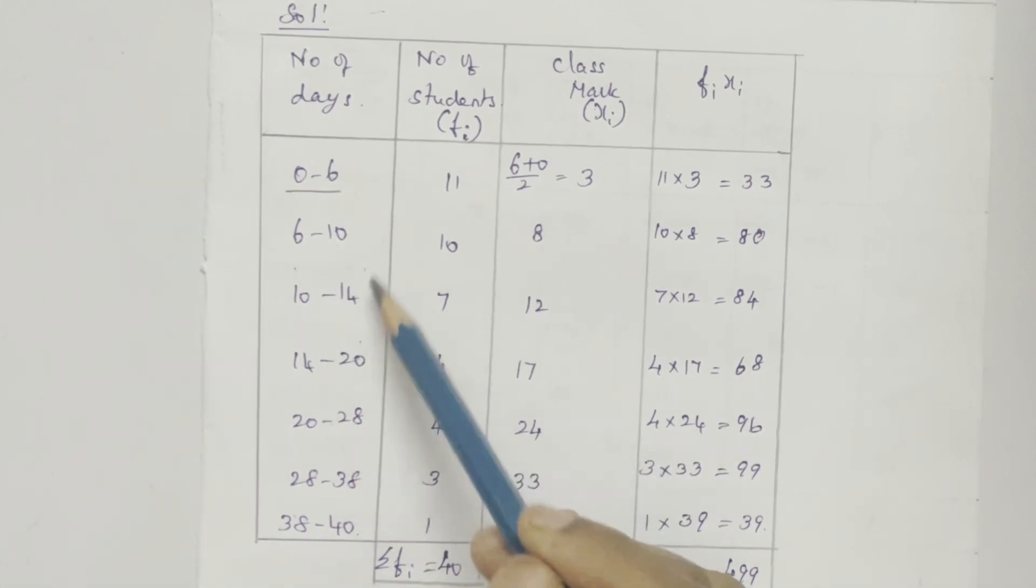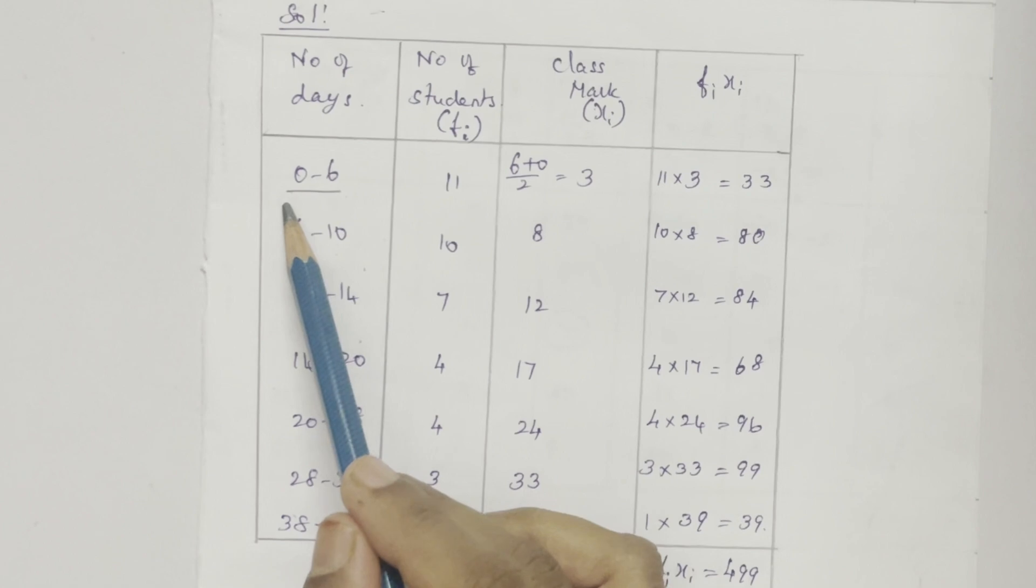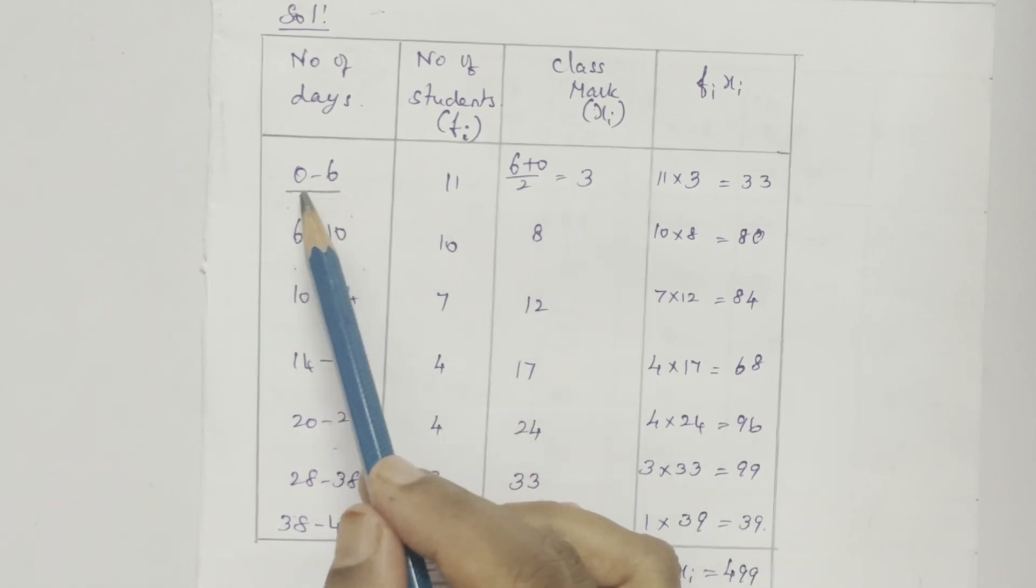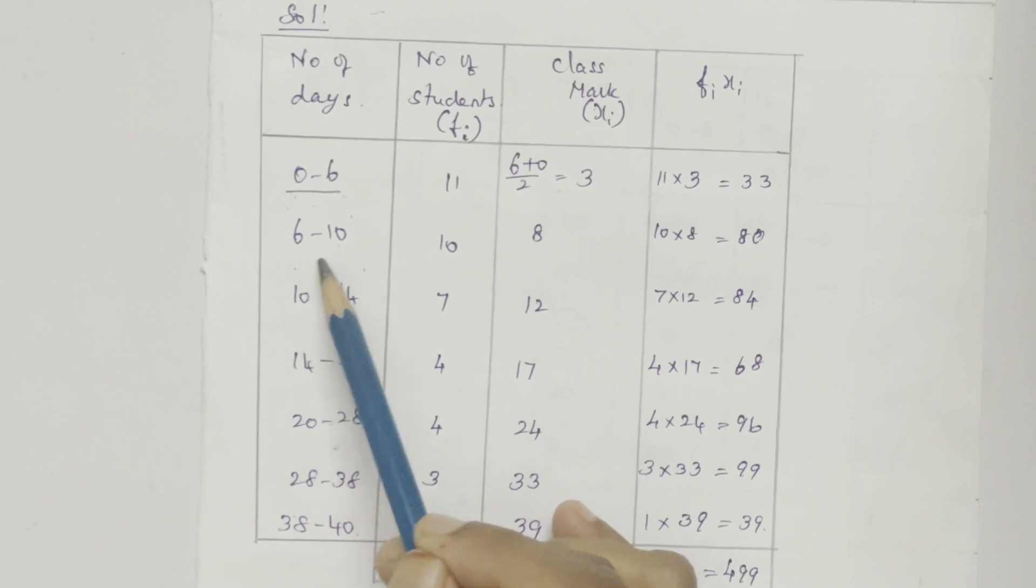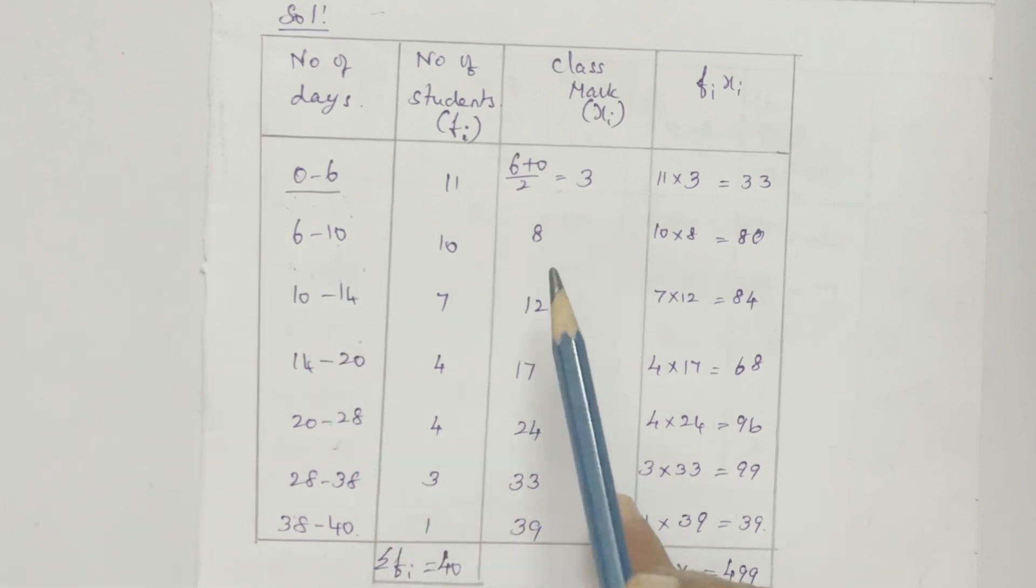From the interval, that is upper limit plus lower limit by 2. 6 plus 0 by 2 is 3. 10 plus 6 is 16, 16 by 2 is 8. In that way we have to calculate xi, that is class mark.